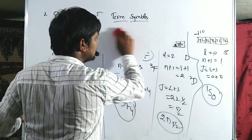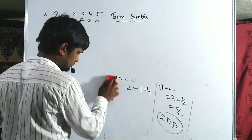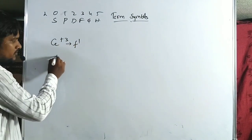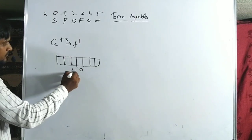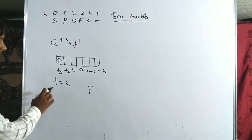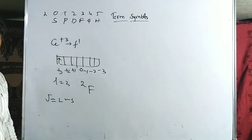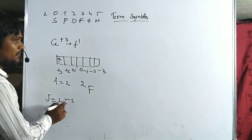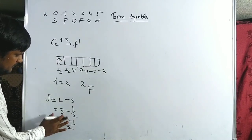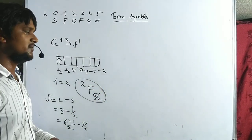Now for F electronic configurations — one or two examples. For Ce3+ (F1 configuration): one electron at ML = +3, so L = 3, term is F. One unpaired electron, multiplicity = 1+1 = 2. Less than half-filled, J = L−S = 3−1/2 = 5/2. The ground term symbol for Ce3+ is 2F(5/2).